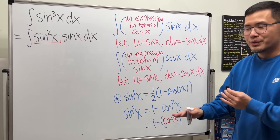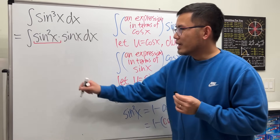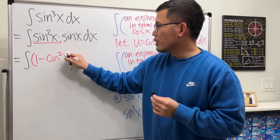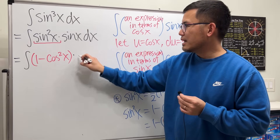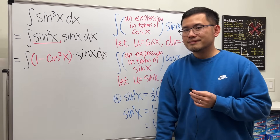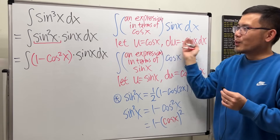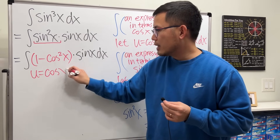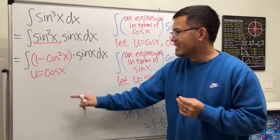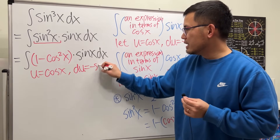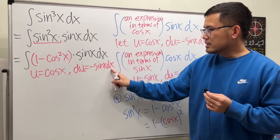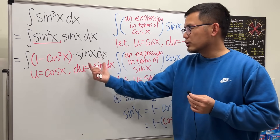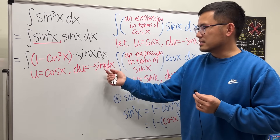So we write the integral replacing sine squared x with one minus cosine squared x, then times sine x dx. We do a u-substitution with u equal to cosine x, noting that du equals negative sine x dx. We can isolate dx to get dx equal to du over negative sine x.